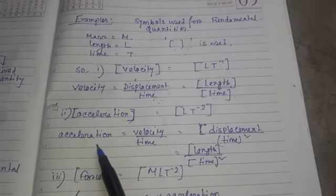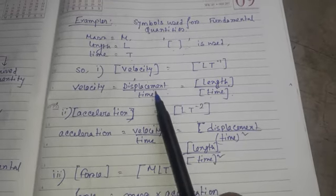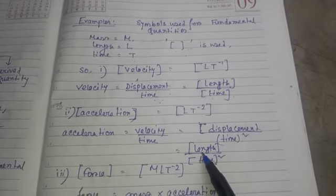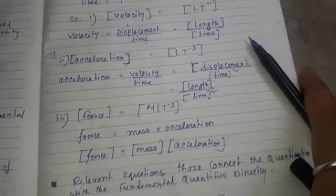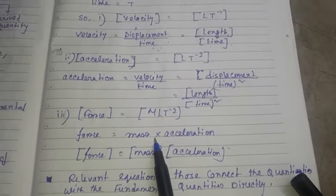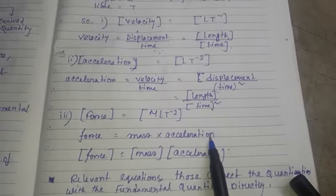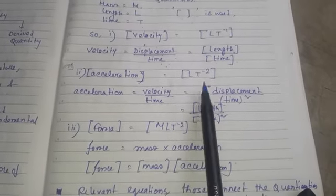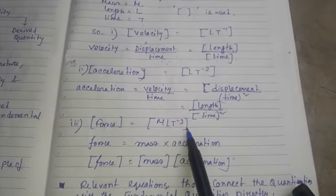Next is acceleration. By definition, acceleration is velocity divided by time, and velocity is displacement divided by time, so acceleration is displacement divided by time squared. Since displacement is length, the dimension of acceleration is L T to the power minus 2. Next is force. From Newton's second law of motion, force is mass multiplied by acceleration. Mass is a fundamental quantity and the dimension of acceleration is L T to the power minus 2, so the dimension of force is M L T to the power minus 2.